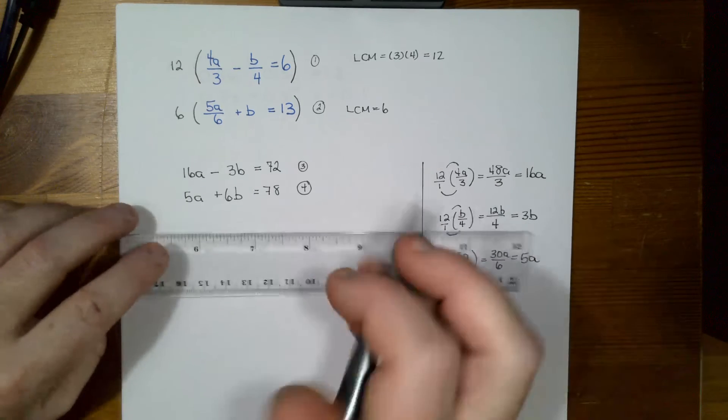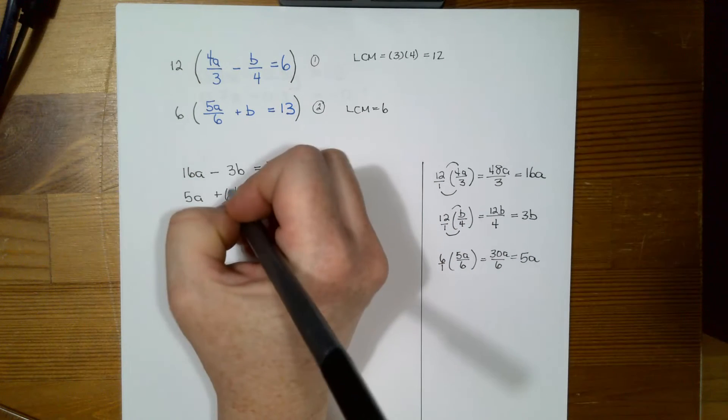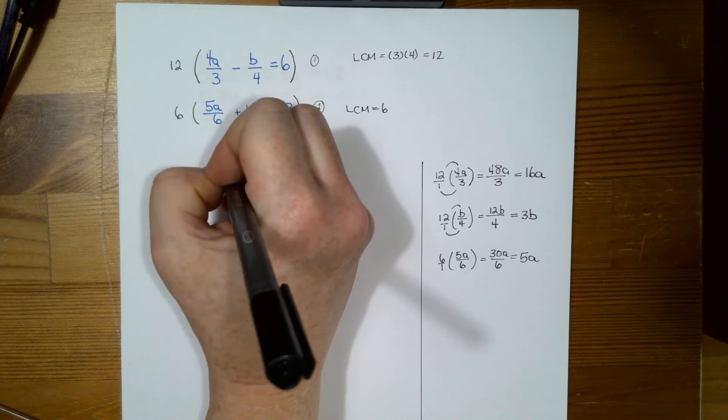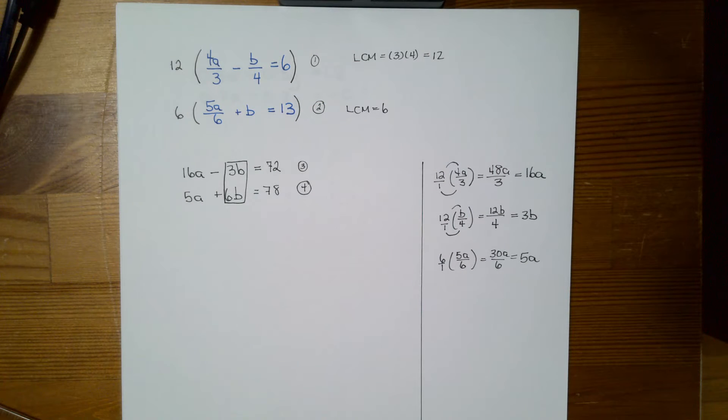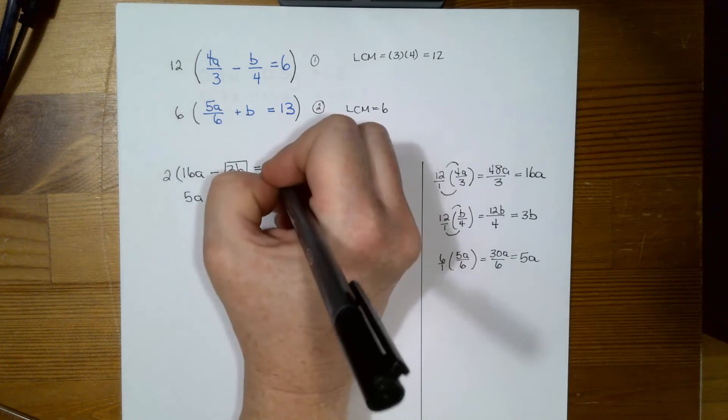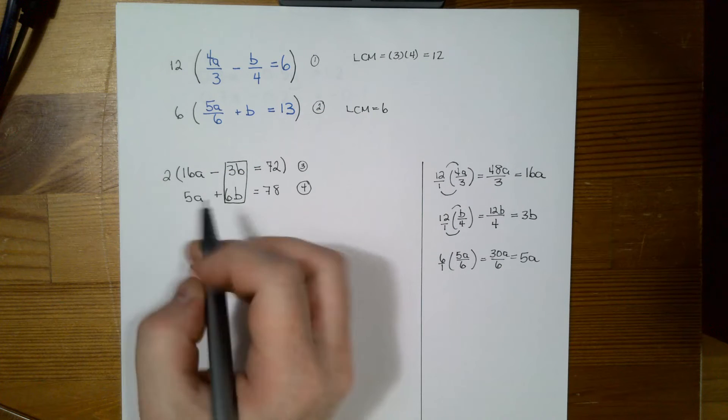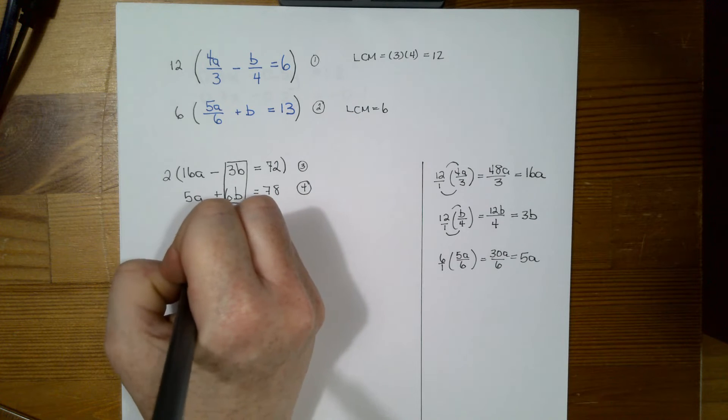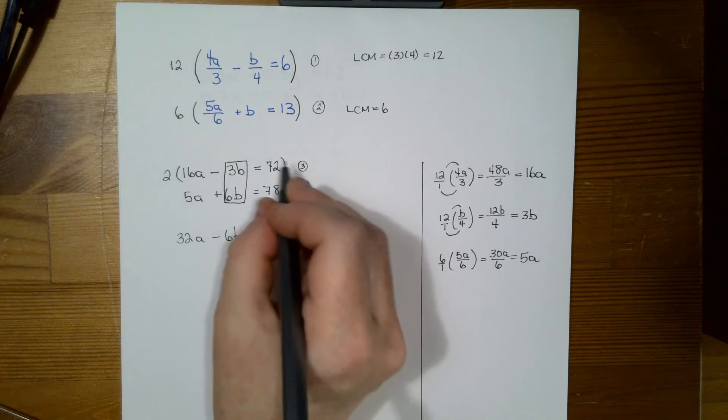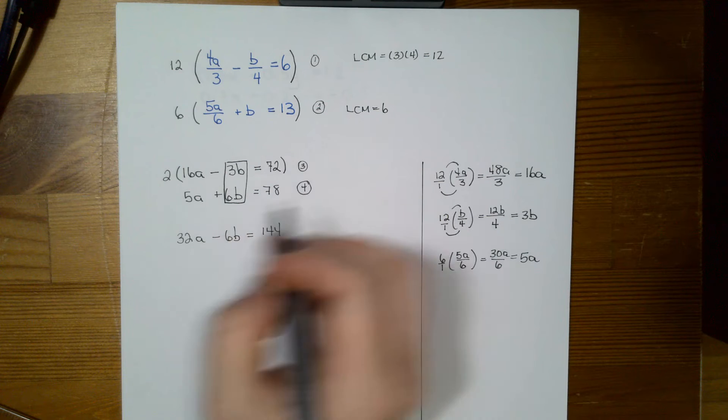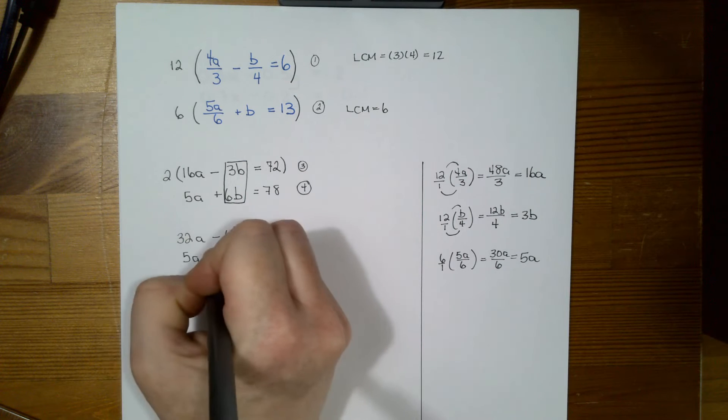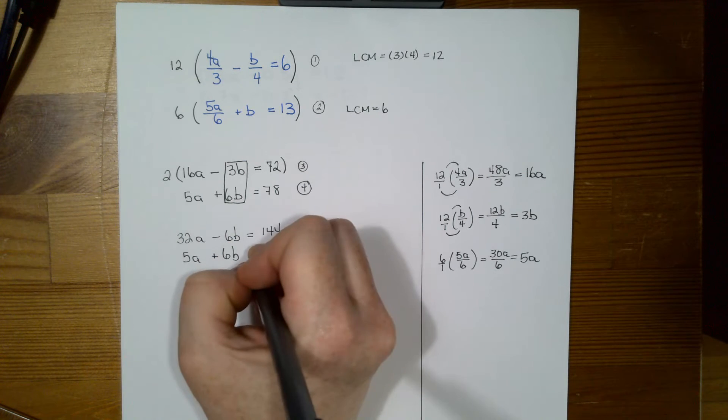So I looked here and I noticed that 3 and 6, it's just double. So I'm going to actually eliminate the b's. Okay, so that's the one I want to eliminate. Now I know that all I have to do is double 3 and I get 6. So I'm actually just going to multiply this one again by 2. So now I have 2 times 16 is 32a. 2 times negative 3b is negative 6b. And 2 times 72 is 144. And I don't have to do anything to this one because it already has that 6b. So I have 5a plus 6b equals 78.